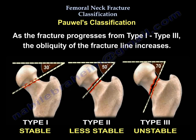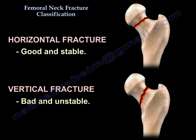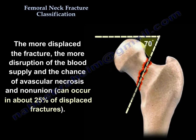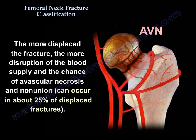Type 3 has an obliquity between 50 to 70 degrees or more. As the fracture progresses from Type 1 to Type 3, the obliquity of the fracture line increases, the fracture line becomes more vertical, shear forces increase, and instability increases. Horizontal fractures are good and stable; vertical fractures are bad and unstable. The more displaced the fracture, the more disruption of the blood supply and the greater the chance of avascular necrosis and non-union, which can occur in about 25 percent of displaced fractures.